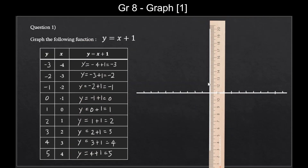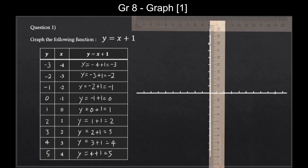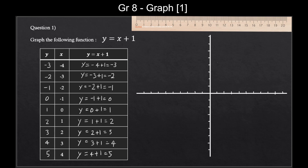Now, put an arrow on the right side and call this horizontal line the x-axis — write X here. Put another arrow on top; this vertical line is called the y-axis. Write Y here.